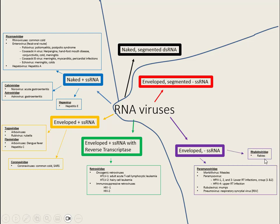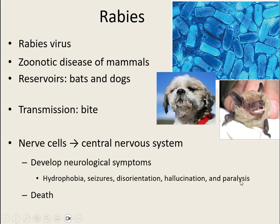The next virus is in the Rhabdoviridae group. It causes the disease known as rabies, a zoonotic disease picked up by interacting with animals. It's not a respiratory thing — we pick it up by the bite of an infected animal, because the virus concentrates itself in the salivary glands. When an animal bites you, that saliva gets into an open wound, and that's the transmission. The virus also has a unique bullet-shaped capsid.